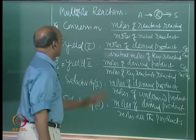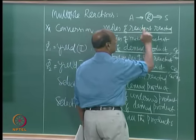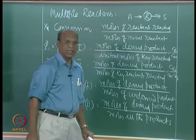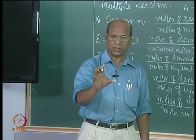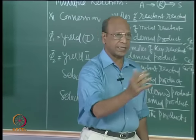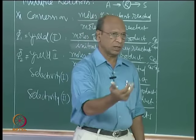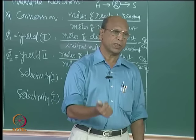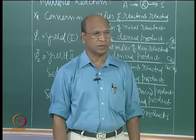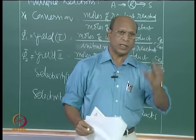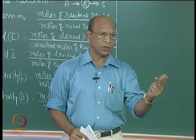One way of proceeding is to go straight to the equations. For example, if A→R and R→S are first-order elementary reactions, write the rate equations. Then go to the corresponding reactor — batch, plug flow, mixed flow, or recycle — and find the yield for each reactor.